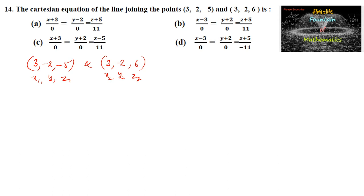So we know that the equation of the line passing through these two points is x minus x1 upon x2 minus x1 is equal to y minus y1 upon y2 minus y1 is equal to z minus z1 upon z2 minus z1. This is the two point form of a line.